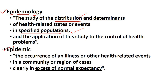Next we are moving to epidemic. Epi means upon, demic means people. Epidemic is the occurrence of an illness or health-related events in a community or a region clearly in excess of normal expectancy. The most important word in this definition is 'excess of normal expectancy.' Even when a single case is not normally present in that community, if you find a single case, that will be considered an epidemic.